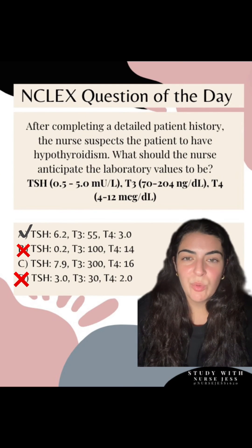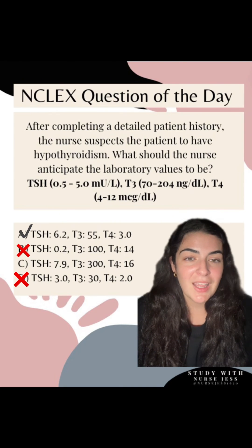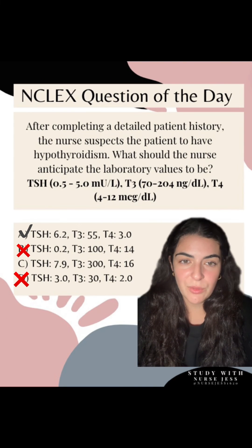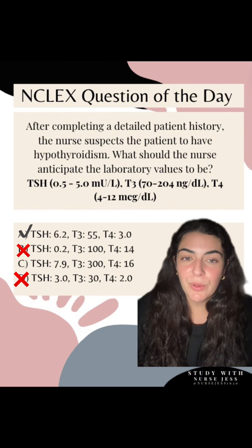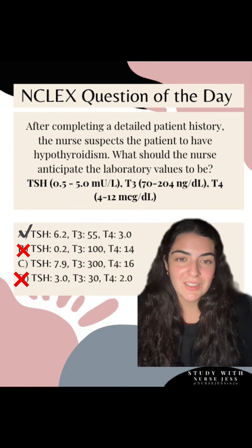Teaching point for today: in hypothyroidism, we anticipate a high TSH with a low T3 and T4. And in hyperthyroidism, I anticipate a low TSH with a high T3 and T4.